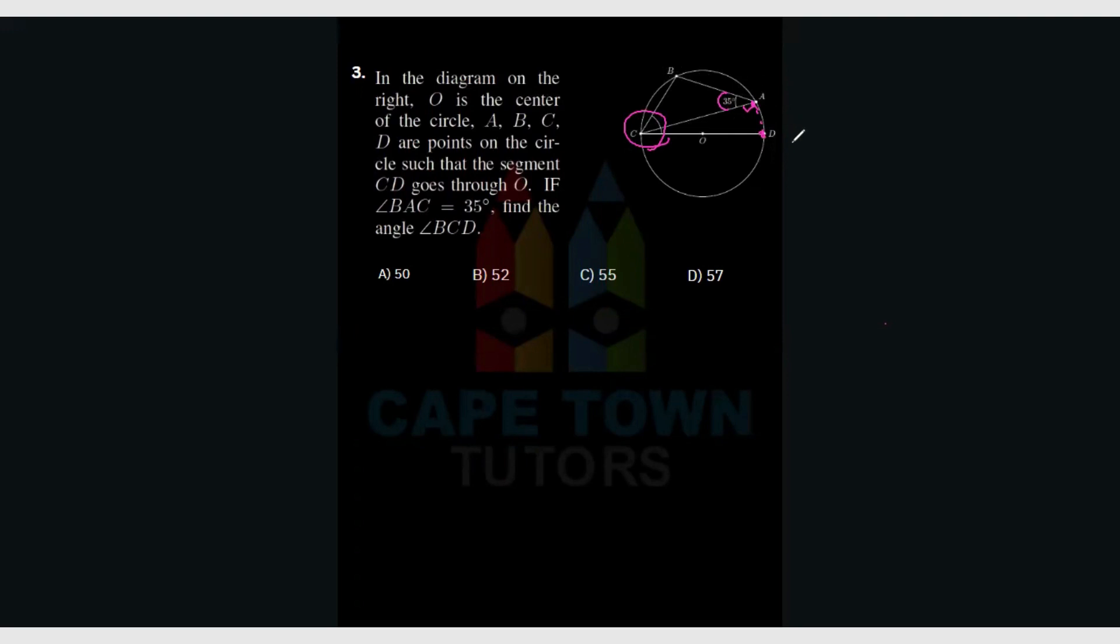Now angle BAD, what is angle BAD? Angle BAD would be the 35 plus the 90 degrees. Now 35 plus 90 would be equal to 125.